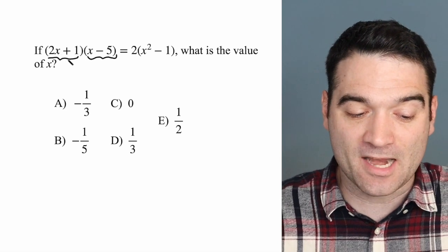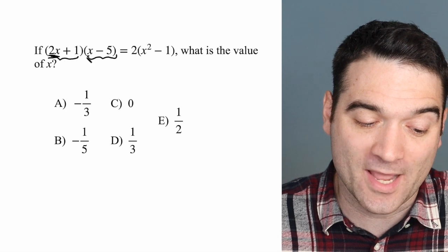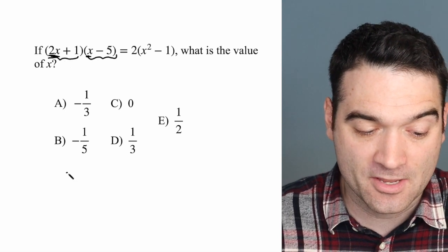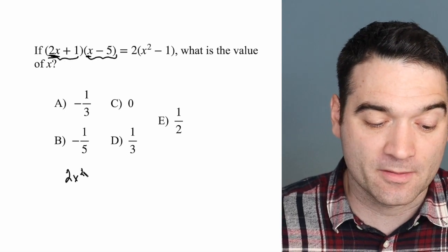When I have this set up, I'm going to multiply the first terms together, 2x and x. I'll write it down here. So that's 2x squared. There we go.